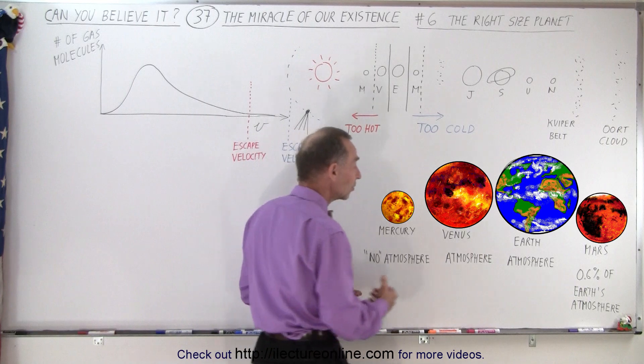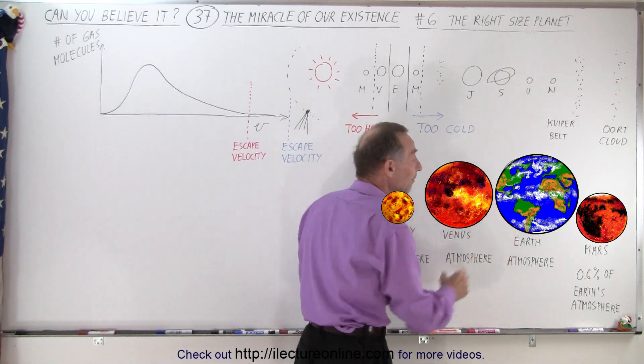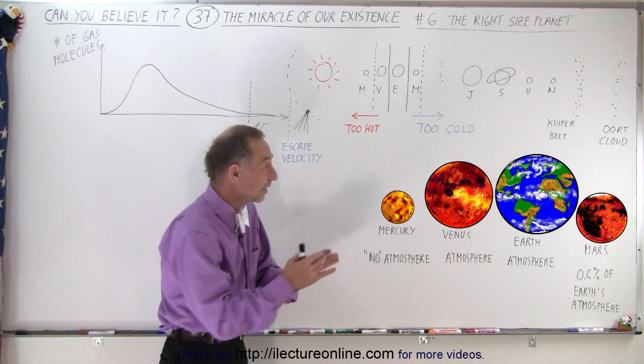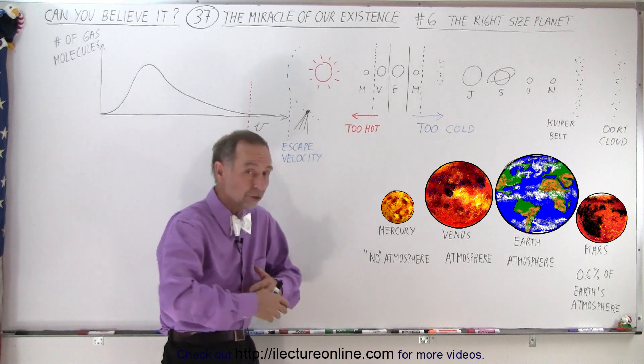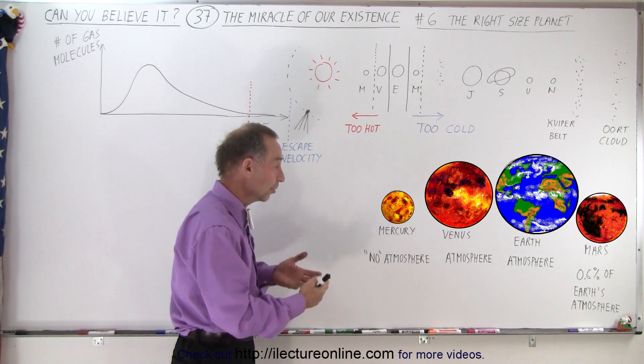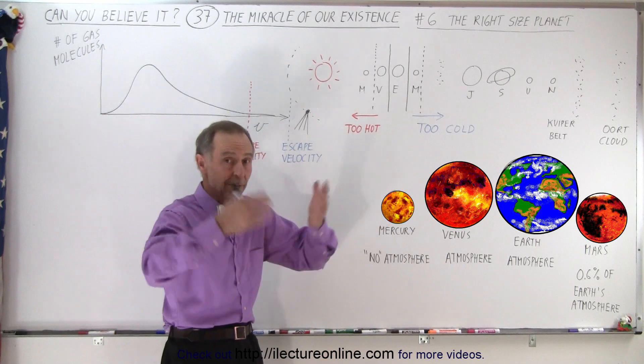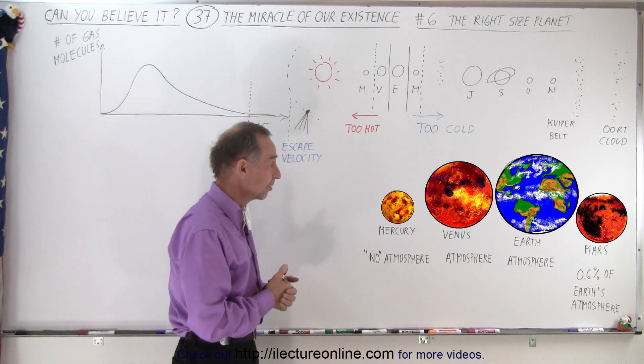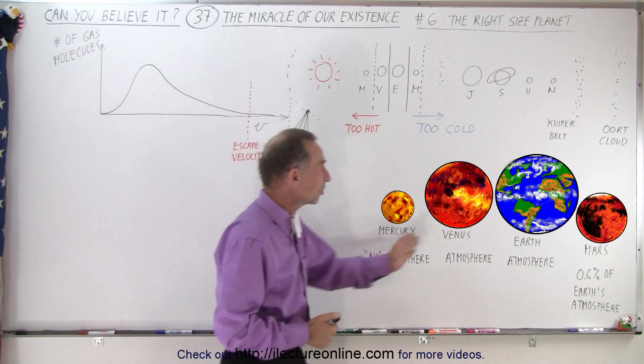So that leaves us with the two planets, Venus and Earth, which do have an atmosphere. But since Venus is too close to the Sun, the oceans probably boiled away, and what's left on Venus is no longer a place where life can exist, with temperatures that are just enormously high. So that only leaves the Earth.